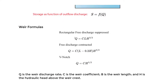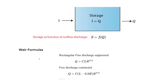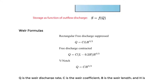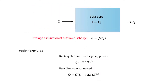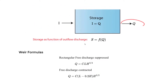The outflow discharge Q depends on weir formulas found in the reference handbook. For a rectangular free discharge suppressed weir, Q = C × L × H, where Q is the weir discharge, C is the weir coefficient (which depends on the type of weir), L is the weir length, and H is the hydraulic head above the weir crest.